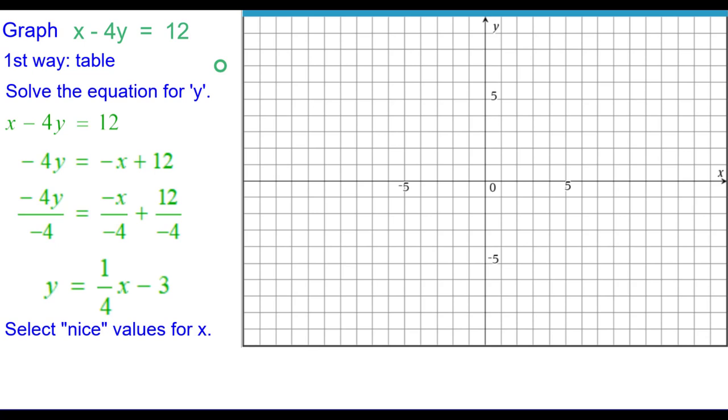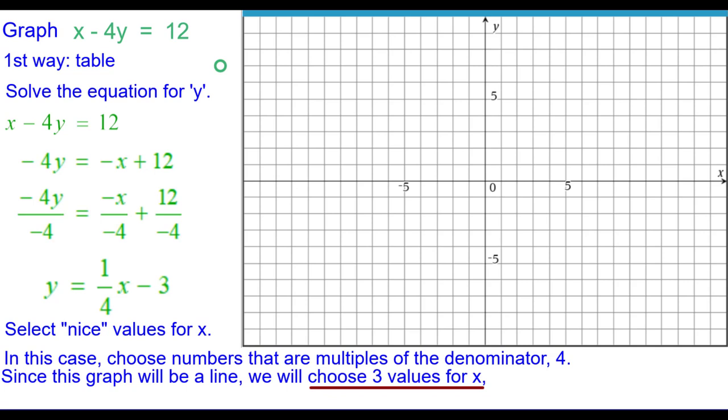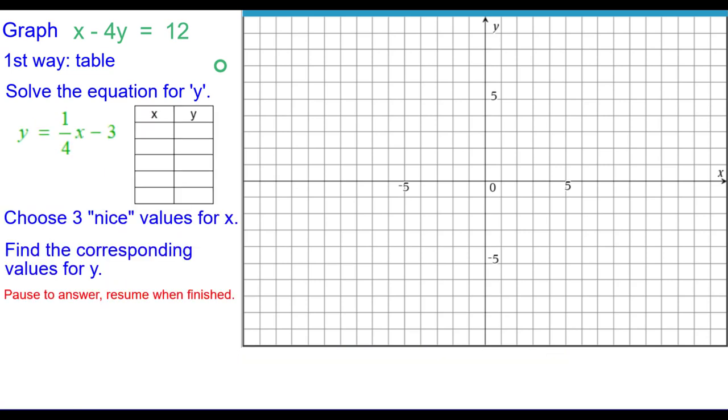We need to select what we call nice values for x. In this case, choose numbers that are multiples of the denominator 4 so that they'll be easily simplified. Since this graph will be a line, we're going to choose three values for x, even though we really only need two. We like to have a third as a checkpoint. So go ahead and choose three nice values for x and then find the corresponding values for y. Press pause to answer this and then resume when you're finished.